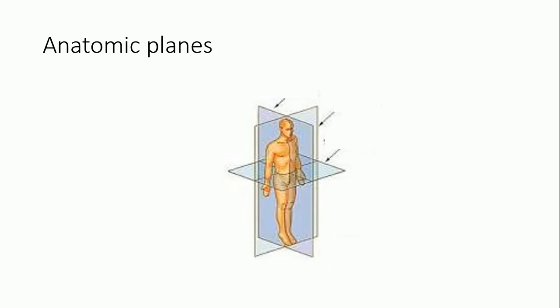An anatomic plane is a hypothetical plane used to describe the location of structures or direction of movement.